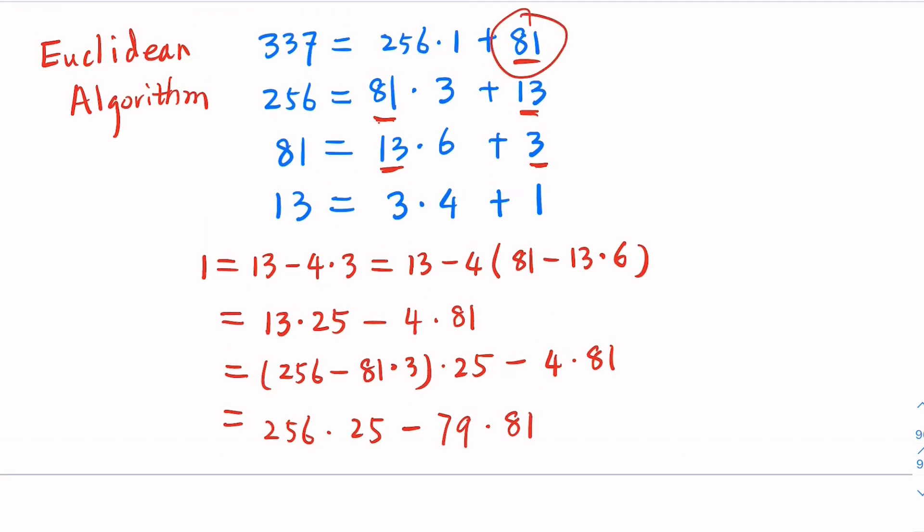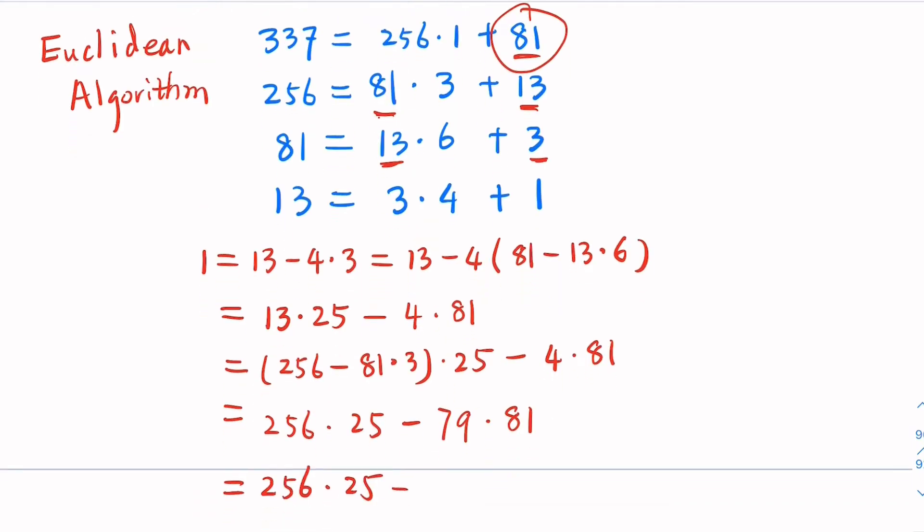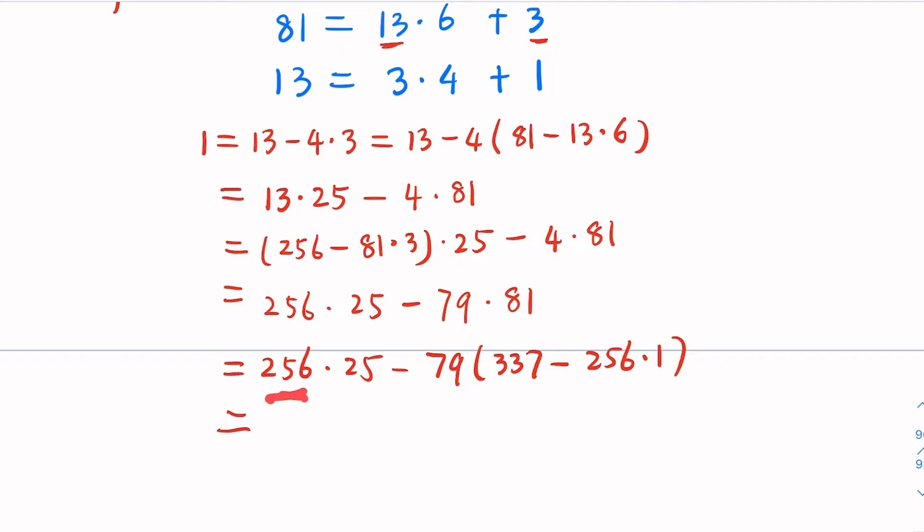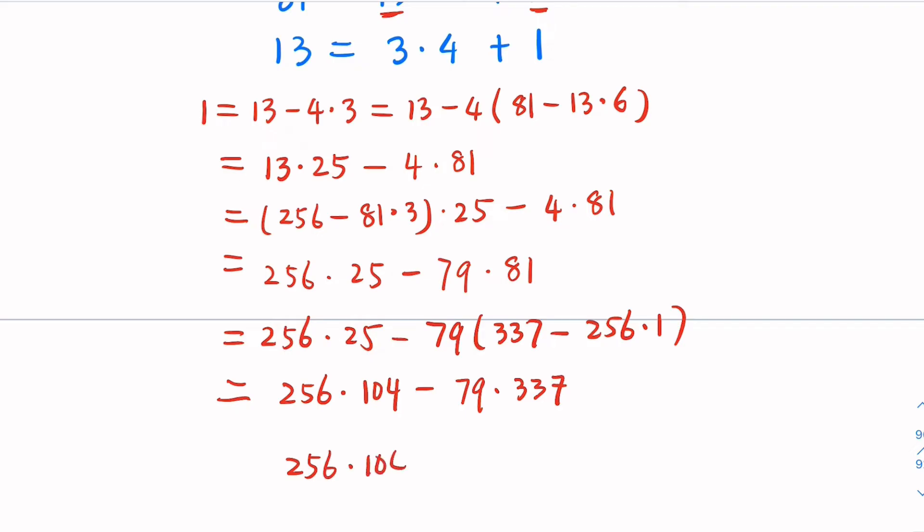For the 81, you're going to replace with 337 minus 256. So we have 256 times 25, 81 is 337 minus 256 times 1. So you're going to combine 256 here. So minus minus is plus, plus 79. So 25 plus 79 times 256 times, going to be 104 minus 79 times 337. We have found a linear combination of these two numbers, which this would be x minus 79 would be y. So we have found this.